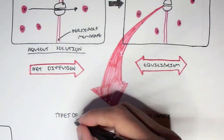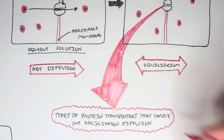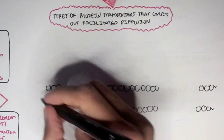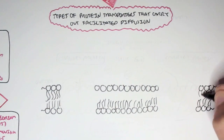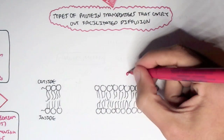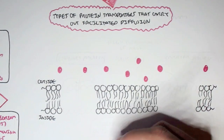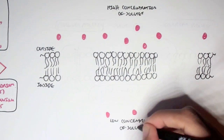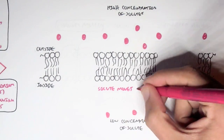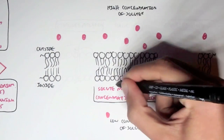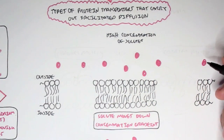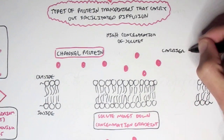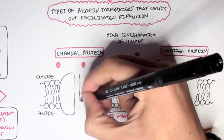There are a few types of proteins that carry out facilitated diffusion. Looking at the lipid bilayer, we have the outside and inside of the cell. The solutes are highly concentrated on the outside relative to the inside, so they must move down their concentration gradient. The two main types of protein transporters that assist facilitated diffusion are channel proteins and carrier proteins.